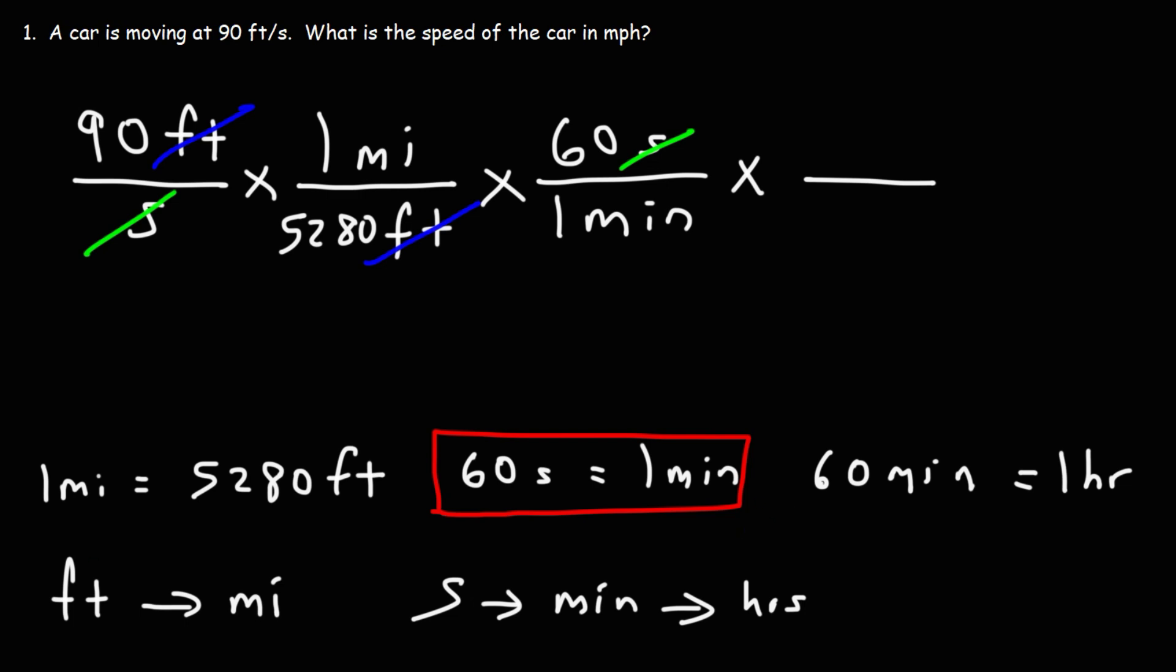Now for the last fraction we're going to use this conversion factor. Since I have minutes on the bottom I'm going to put minutes on top. So let's write 60 minutes in the numerator of the fourth fraction and then one hour on the bottom. So now we can cross out the unit minutes.